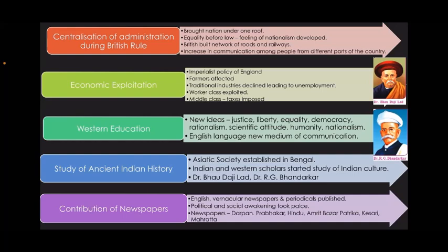The British built a network of roads and railways. They did this because they found it convenient to manage the country. However, this increased communication among people. The next factor is economic exploitation. Due to the imperialist policy of England, there was exploitation of Indian people.